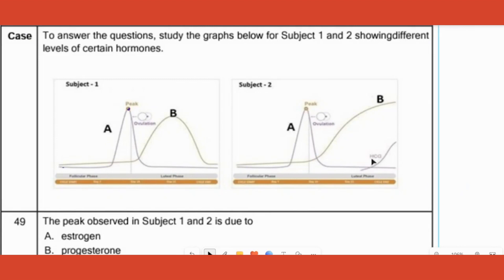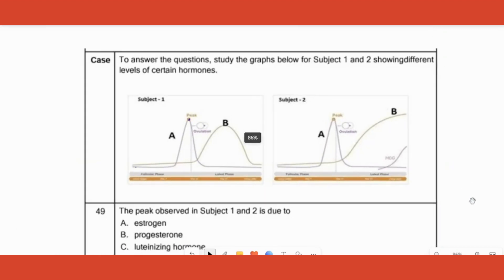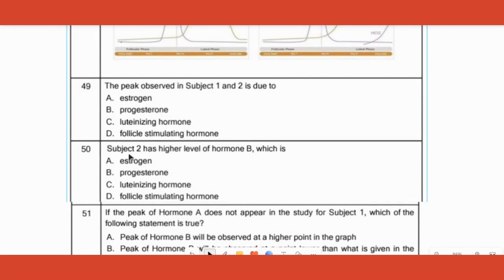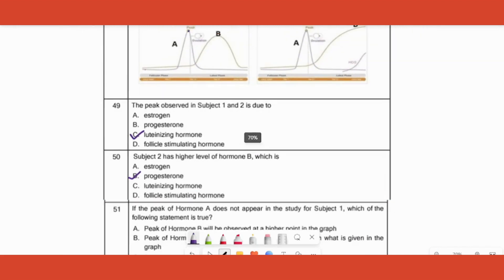There is FSH that goes to highest level, there is estrogen that goes to highest level. However, the one that peaks or goes to the highest level is LH, luteinizing hormone. So that's your answer.